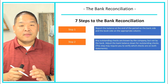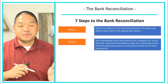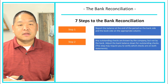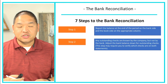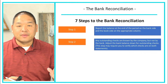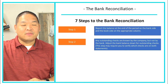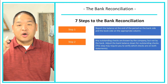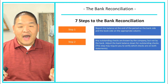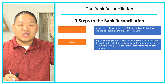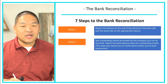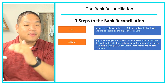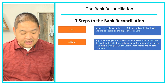This step may require you to verify checks on both statements. What that means is we're going to look at our general ledger and see all of the checks, then get the bank statement with all the checks and amounts, and cross off the ones that are on both statements. At the end of doing that, any checks on the general ledger that you haven't crossed off are your outstanding checks — those are the ones that need to be used to adjust the bank balance.